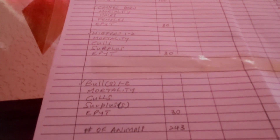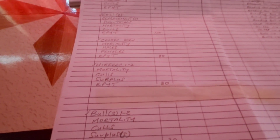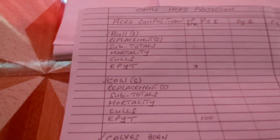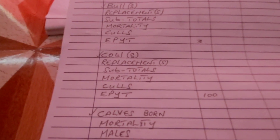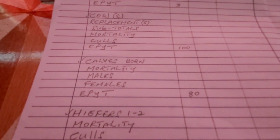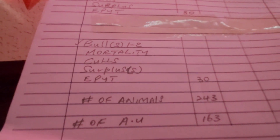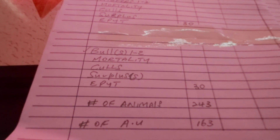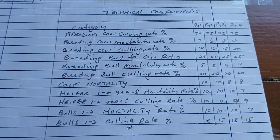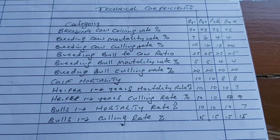The number of animals is all animals counted per category inclusive of calves, but the number of animal units is all numbers counted per category excluding calves. In the opening stock, for example: 3 bulls, 100 cows, 80 calves, 30 heifers, and 30 bulls one to two — a total of 243. If we remove the 80 calves, we arrive at 163 animal units.